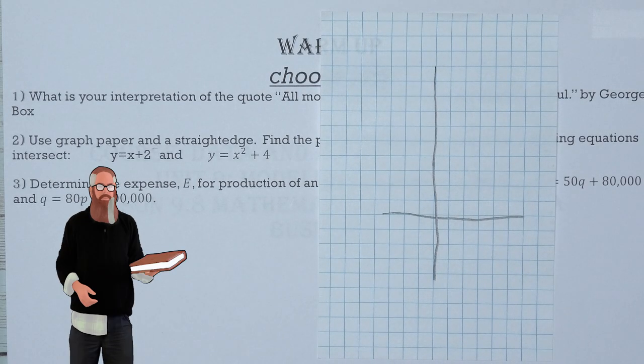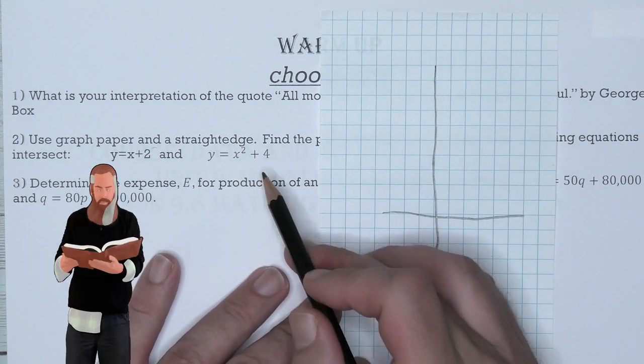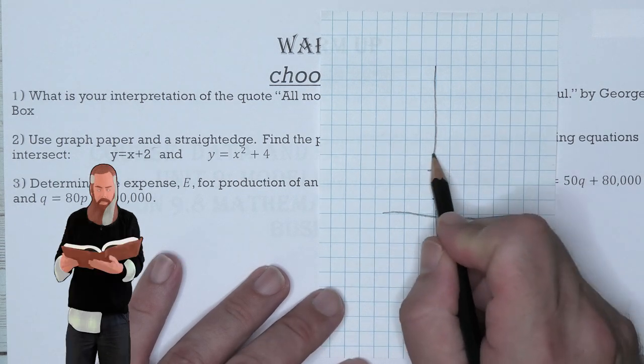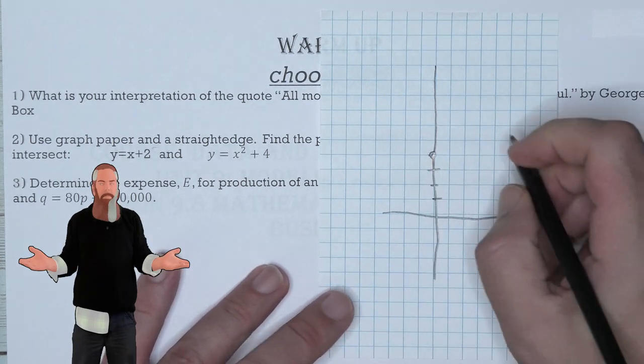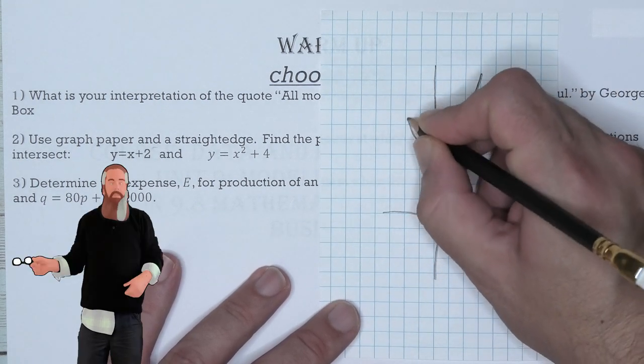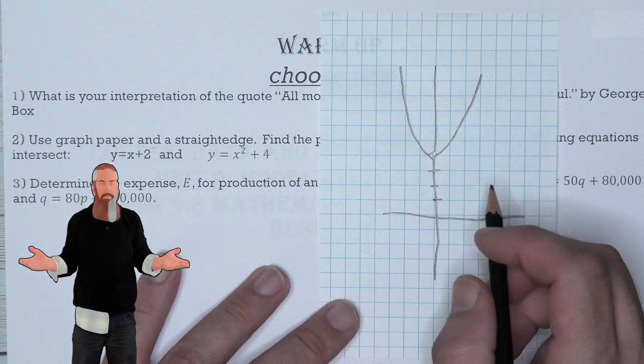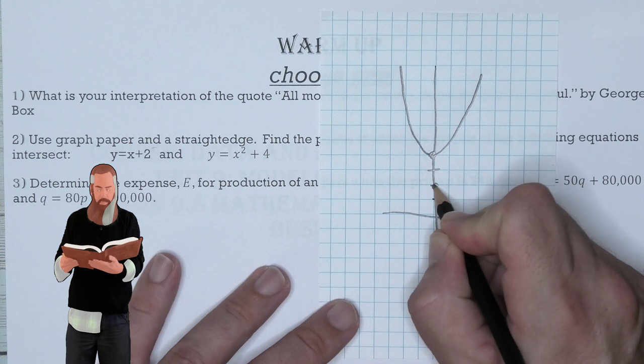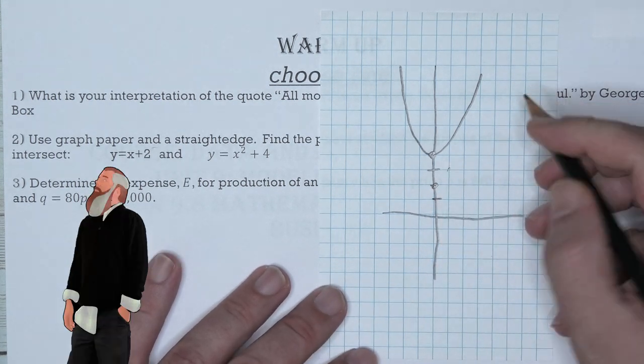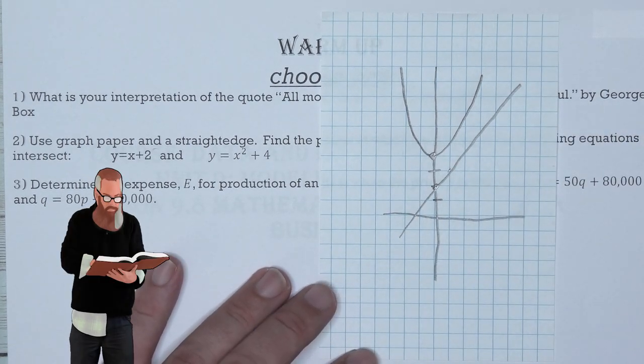And here we have a perfectly made scientific graph. Let's start with this parabola. X squared plus four means it is a parabola that goes through the y-axis at four. Now, it's going to move up at mirrored rates on both the left and right side. Graphing the equation y equals x plus two means it goes through the y-axis at two. It has a positive slope of one, and we wind up with that line, though these two do not intersect.